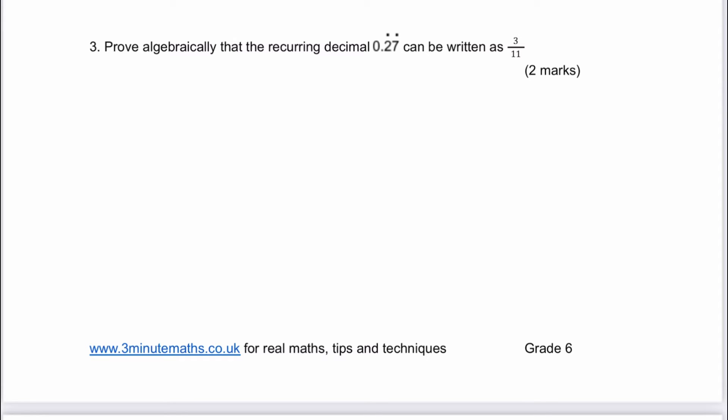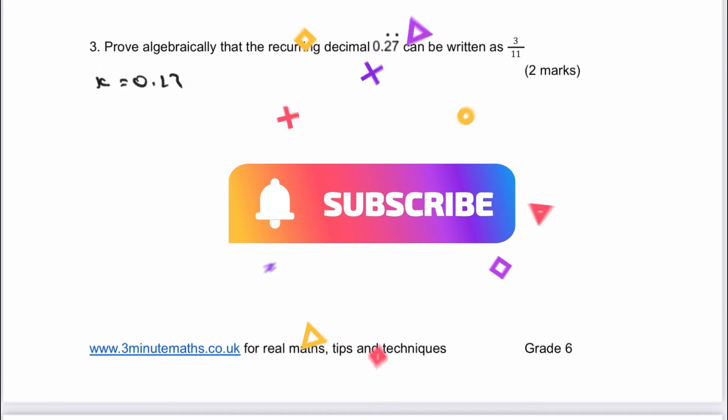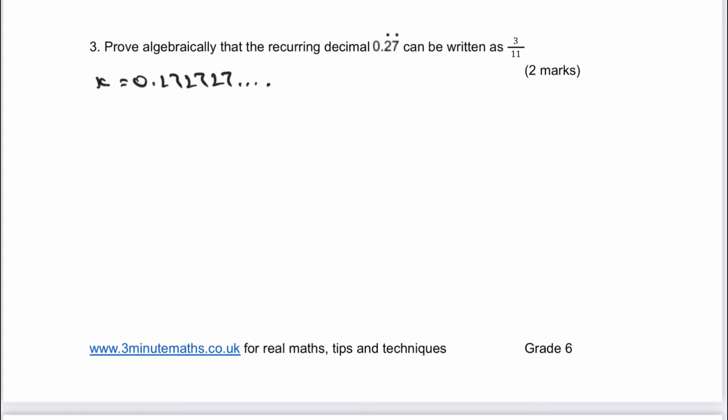In question number three, we've got proving algebraically that the recurring decimal can be written as that. So the way I would do this is I would write x equals 0.272727 dot dot dot, and that's absolutely fine, goes on forever.